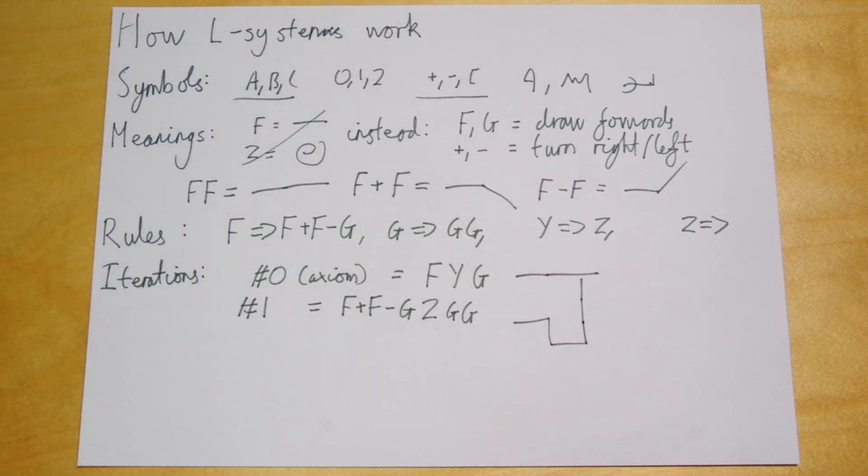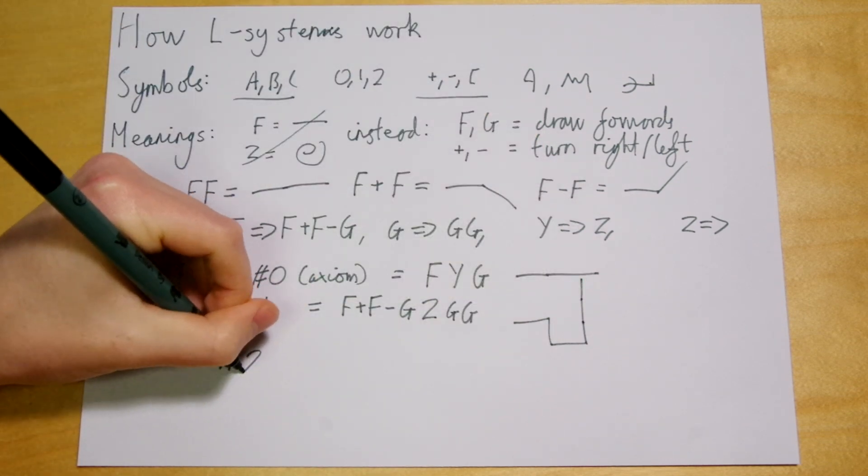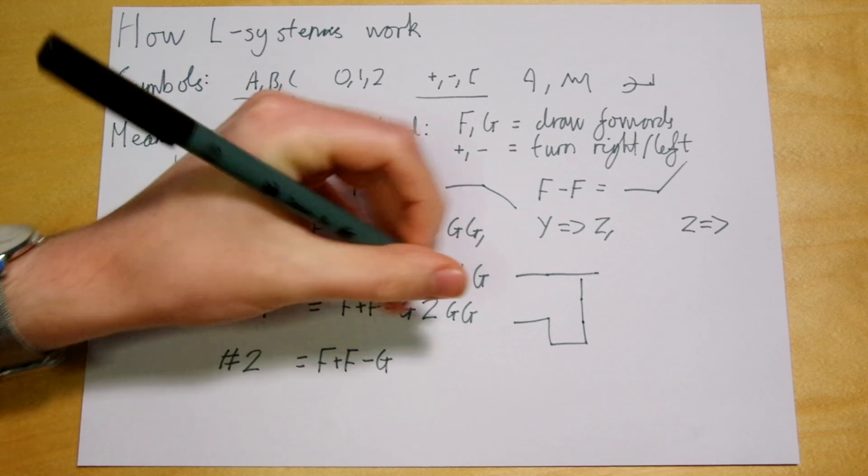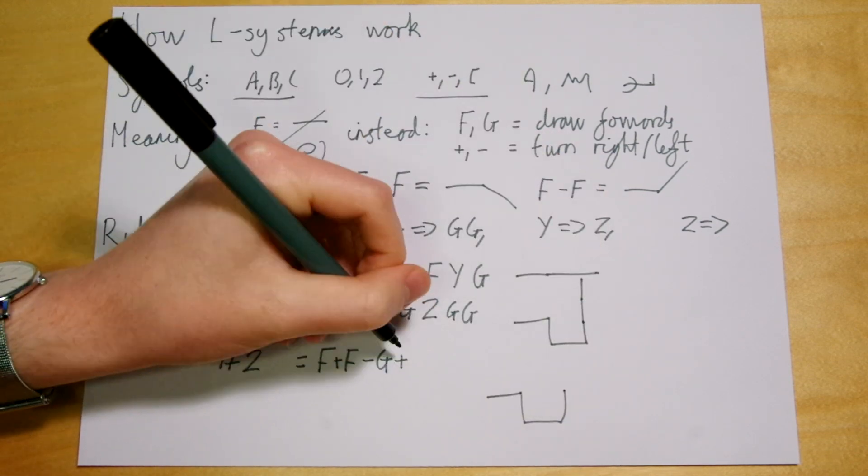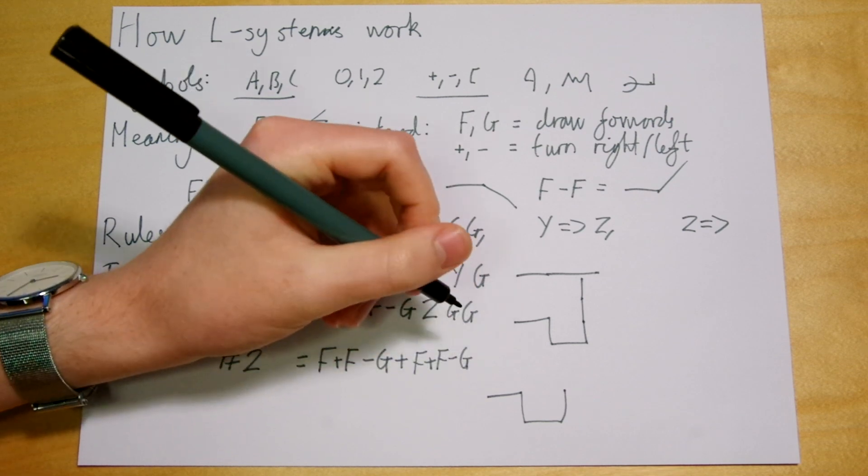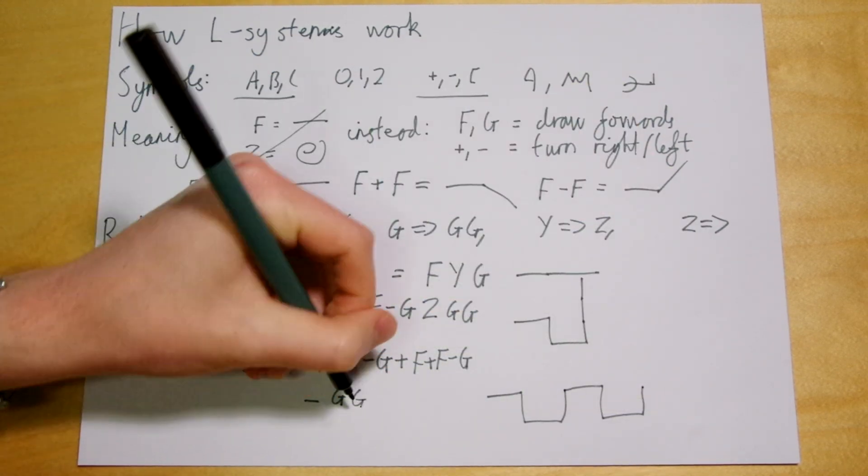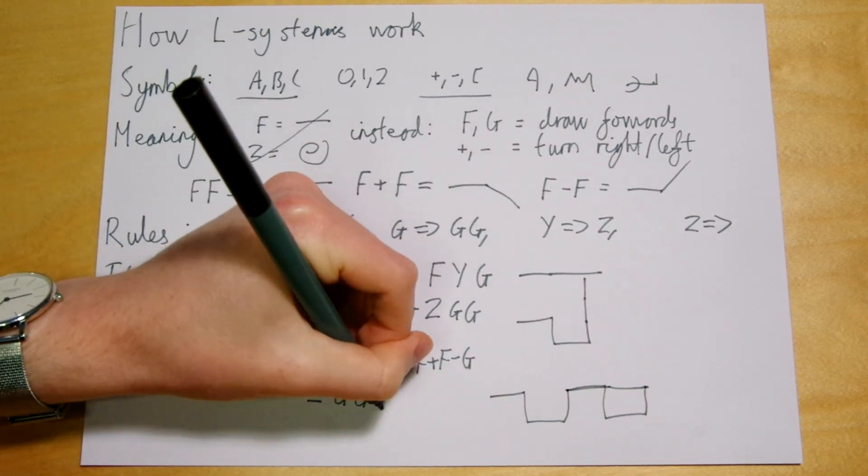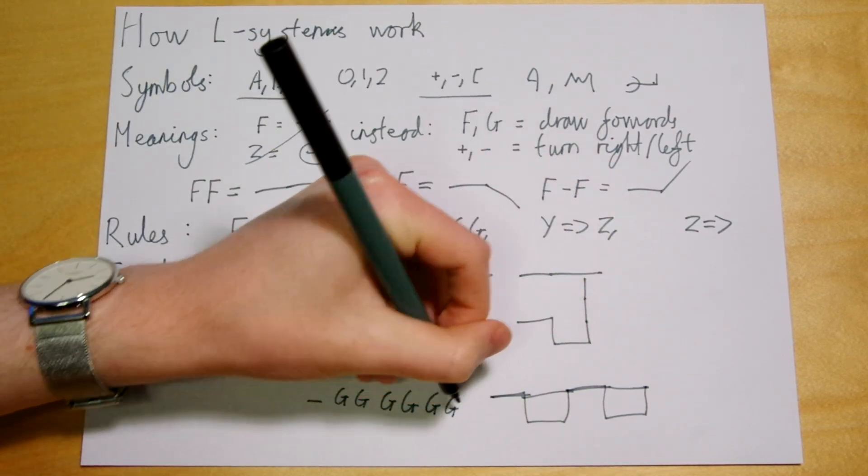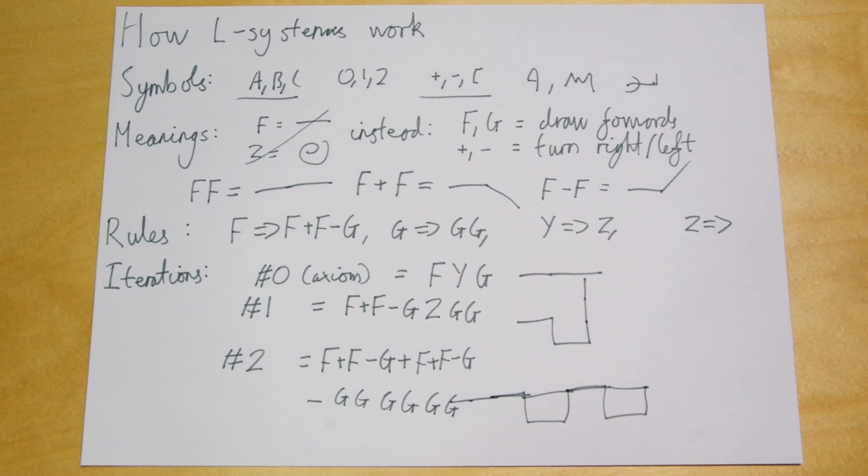Note we haven't given the Z any meaning when it comes to drawing, so I didn't do anything to draw it. And then if we do the same thing to this, the first iteration, we get the second, which is rather more complicated. And you can see the pluses and minuses don't change, because we don't have any rules for them. Now that we've learned about L systems, we can use them to do some drawing.